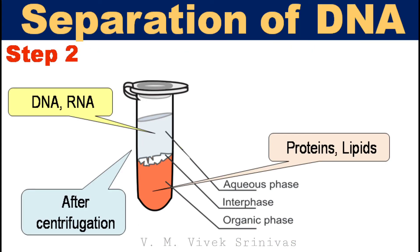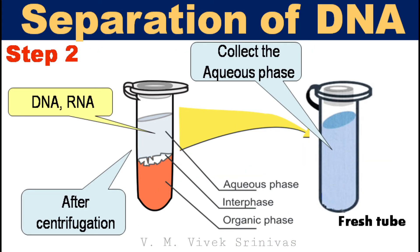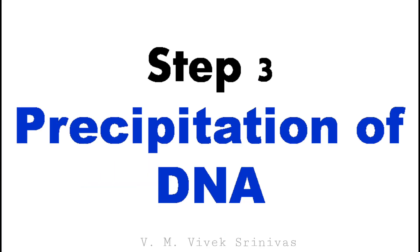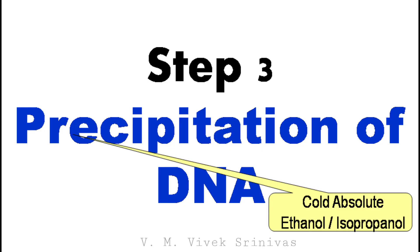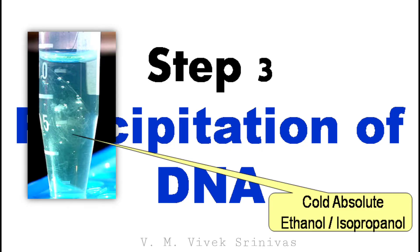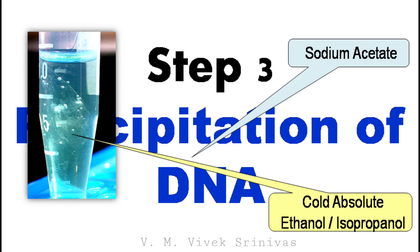Following phase separation, collect the aqueous phase (the supernatant) in a fresh tube. RNA can be broken down by adding an RNase enzyme to the collected aqueous phase. Step 3: Precipitation of DNA using cold absolute ethanol or isopropanol. Generally, DNA is insoluble in these alcohols, so it will aggregate together giving a pellet upon centrifugation. Precipitation of DNA can be improved by adding sodium acetate.